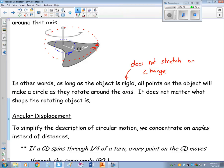All points on the object will make a circle as they rotate about that axis. It doesn't matter what the shape of the rotating object is.